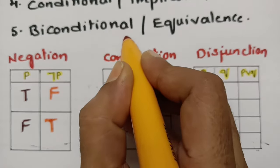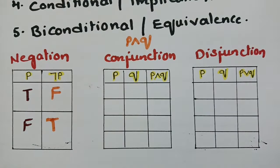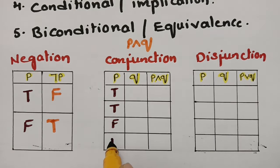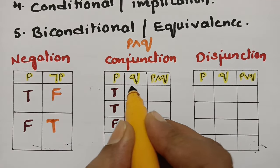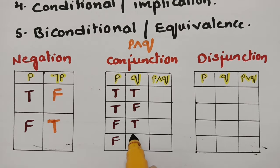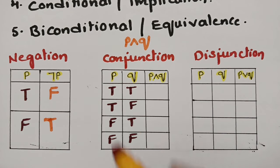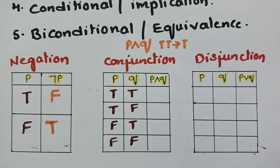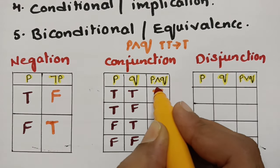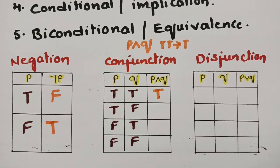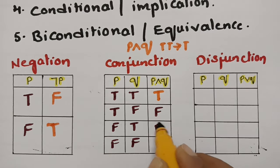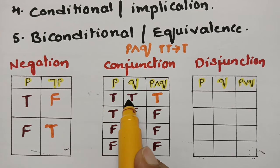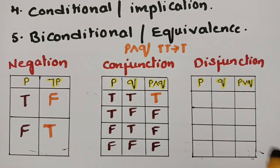Coming to conjunction: if there are two statements connected with 'and,' that is conjunction. The P values are true, true, false, false and Q values are true, false, true, false. Always remember that for conjunction, if there are two truths, blindly keep true — the rest are all false. If both are true, 'and' is also true.